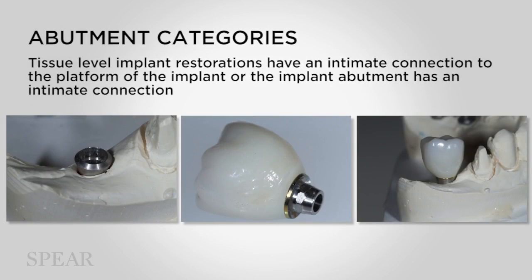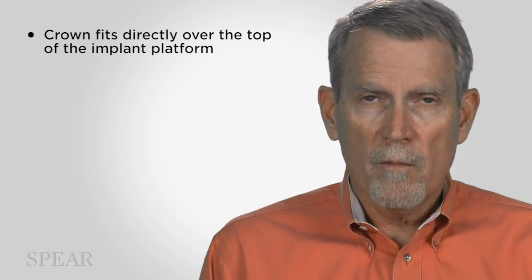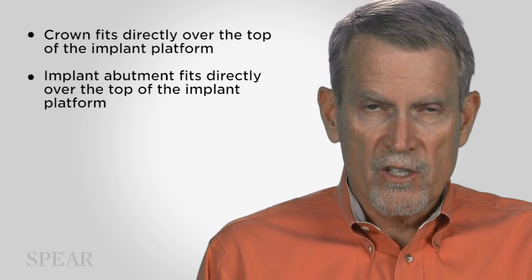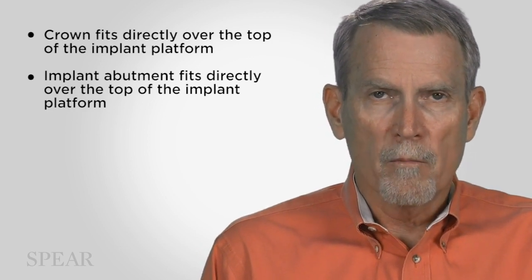Let's think about different categories. We know that there are tissue-level implant restorations and bone-level implant restorations, and there's a difference between the two. In the tissue-level implant restoration, there is an intimate connection to the platform of the implant — either the crown fits directly over the top of that implant platform, or the implant abutment fits directly over the top of that implant platform.